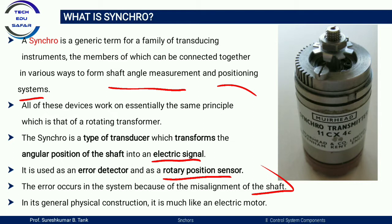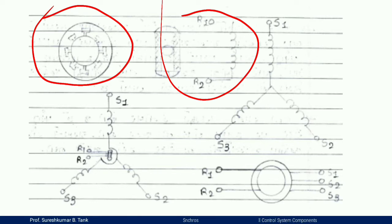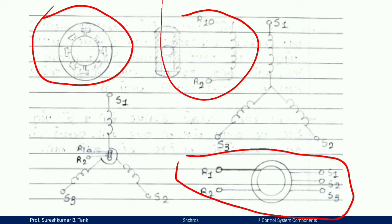In general, physical construction is very much like an electrical motor — AC motor or DC motor. Here is the synchro construction and also the symbol of synchro. There are three stator terminals: S1, S2, and S3, and rotor terminals R1 and R2. The rotor is the rotating part and the stator is the stationary part.